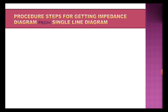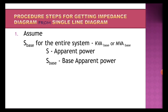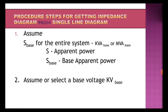The first step is to assume or select a base for the entire system — that is, a kVA base or MVA base. The S base is the base apparent power, in kilovolt-amperes or megavolt-amperes. The second step is to assume or select a base voltage value — the kVA base and base voltage. From these two quantities, as considered previously, we can obtain the remaining two base quantities.